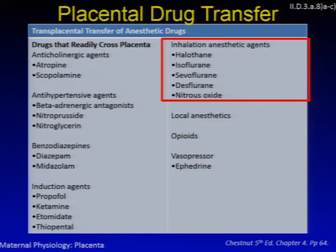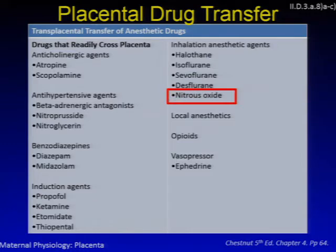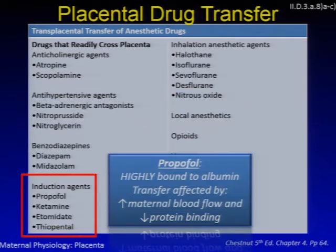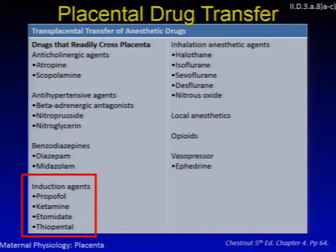Inhalational agents are associated with prolonged induction-to-delivery time intervals, which result in lower APGAR scores. They will also decrease uterine tone, increasing risk for hemorrhage due to uterine atony. Nitrous oxide rapidly crosses the placenta and can cause neonatal depression and diffusion hypoxia in the neonate, where supplemental O2 may be necessary. All IV induction agents cross the placenta. Propofol may have a sedative effect on the neonate — plasma levels in the neonate depend on maternal dose and time-to-delivery interval. Propofol is highly bound to albumin, so transfer is also affected by increased maternal blood flow and reduced protein binding. Ketamine rapidly crosses the placenta within 97 seconds.